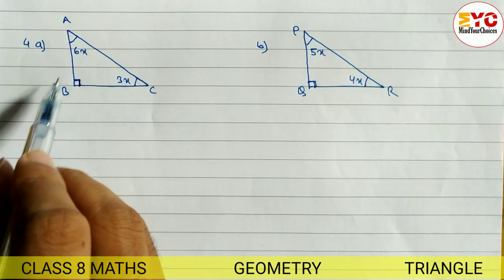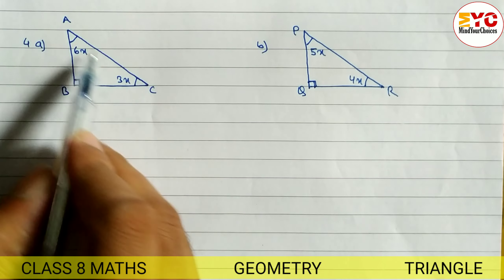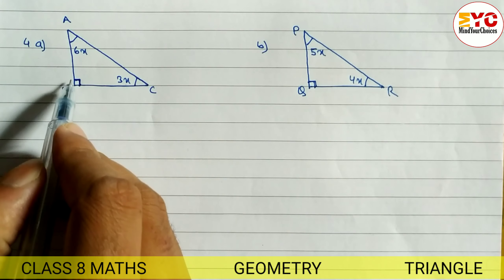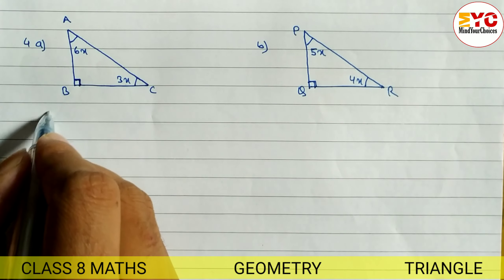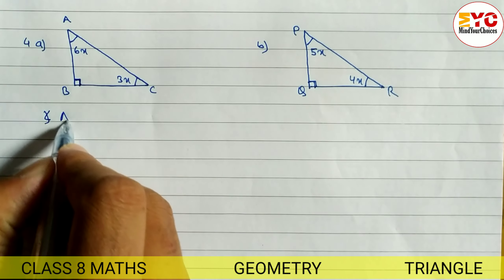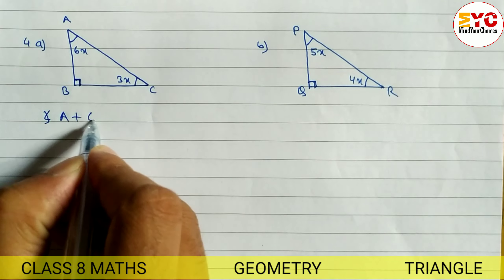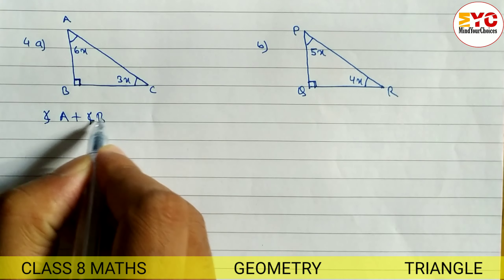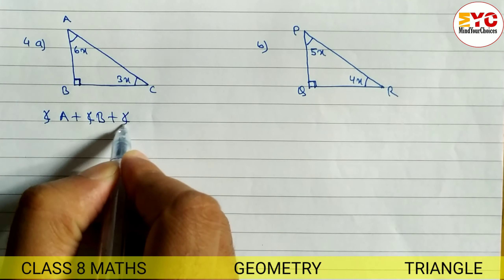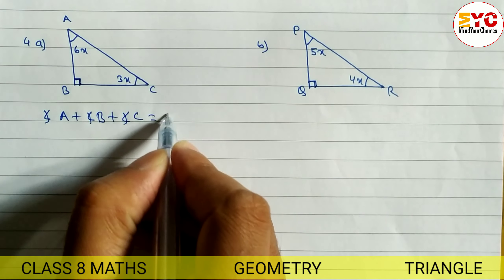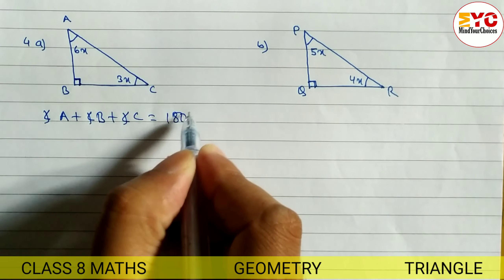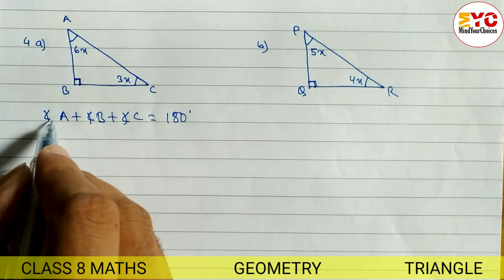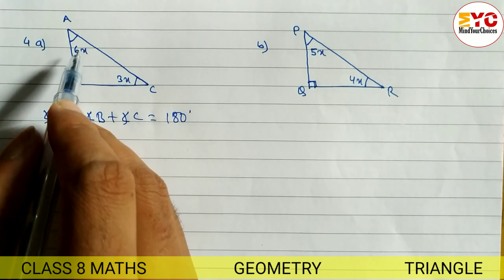We know that the sum of angles of a triangle is 180 degrees. So when you add these three angles: angle A plus angle B plus angle C is equal to 180 degrees. What is the value of A?